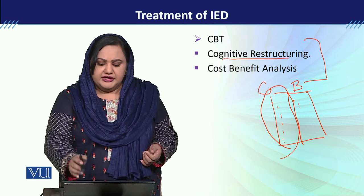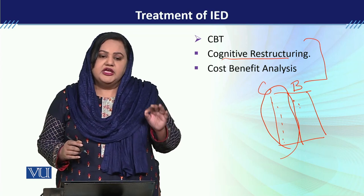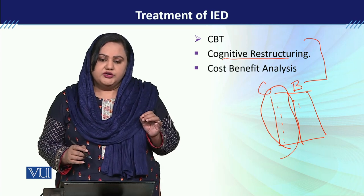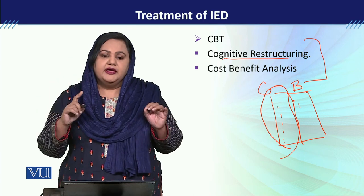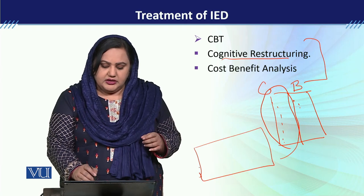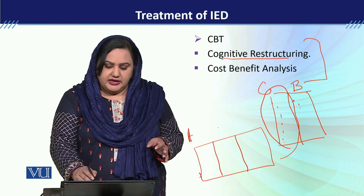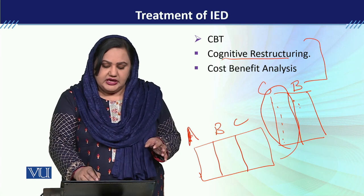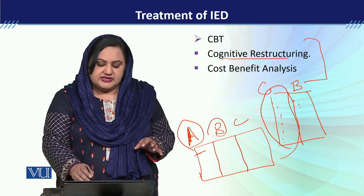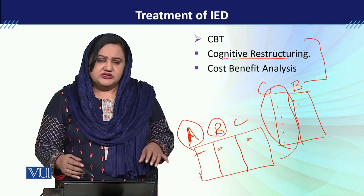اس کے بعد ہم بات کرتے ہیں Cognitive Restructuring کی۔ اس کا مطلب یہ ہے کہ جو بچے کا thought pattern ہے ہم نے اس پر کام کرنا ہے۔ Thought pattern پر کام کرنے کے لیے ہم بات کرتے ہیں cognitive distortions کی۔ اس میں پہلا step یہ ہوتا ہے کہ آپ بچے کو A, B, and C report کرنے کو کہتے ہیں — A یعنی activating event جو بھی situation تھی، B stands for belief یعنی thought process، آپ کے ذہن میں کیا سوچ آئی۔